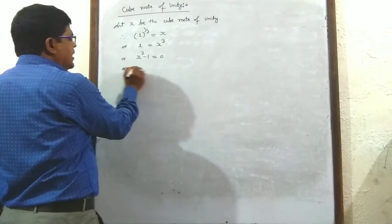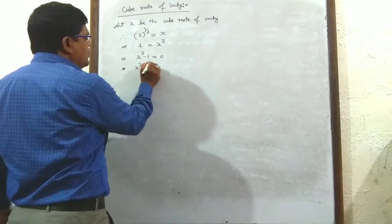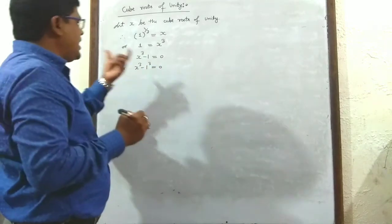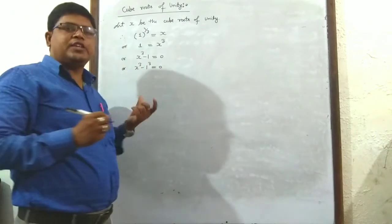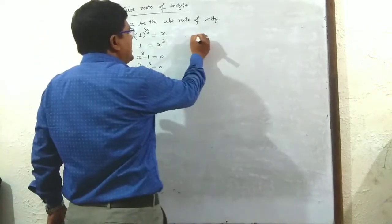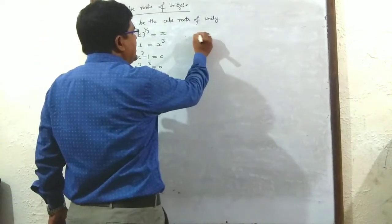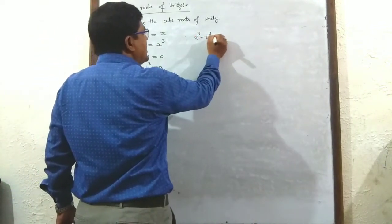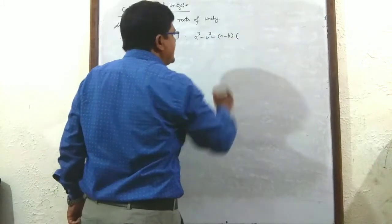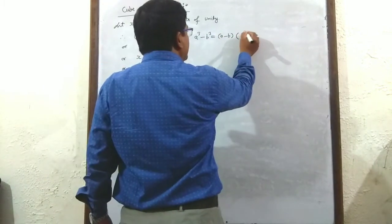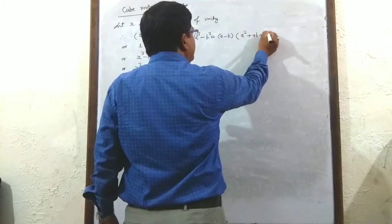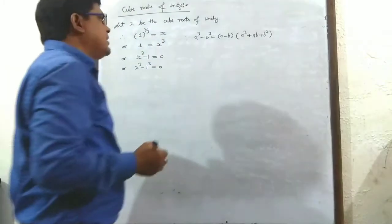Or, x³ - 1³ = 0. Here, apply the formula of a³ - b³. We know that a³ - b³ equals (a - b) in the first bracket, and a² + ab + b² in the second bracket.